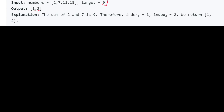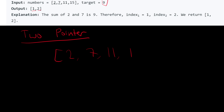To solve this, we're going to use a very powerful algorithm called two-pointer. This is pretty fundamental and will show up a lot in later, more difficult questions. So with [2, 7, 11, 15] and a target of 9, here's how two-pointer works.